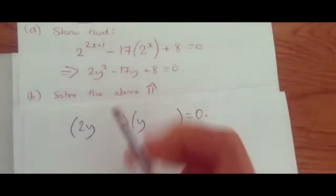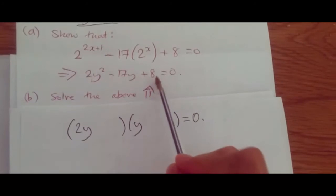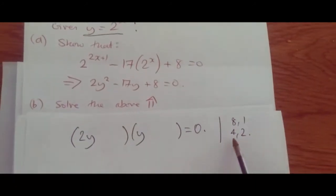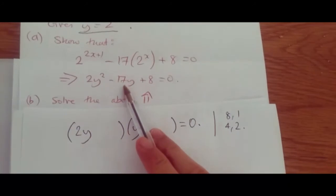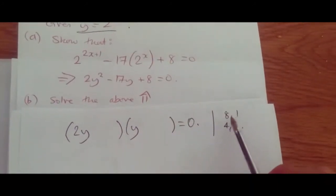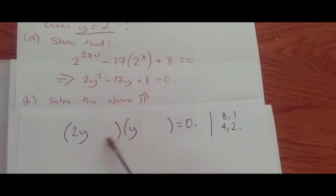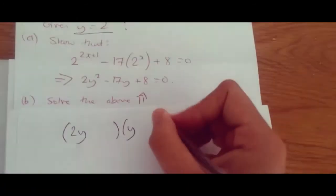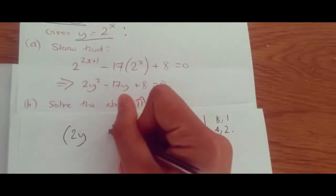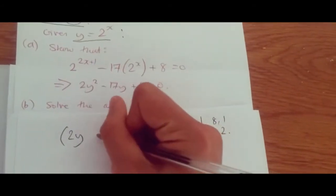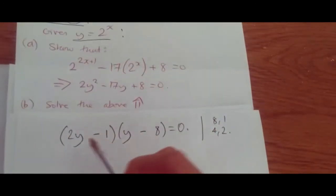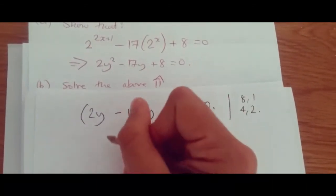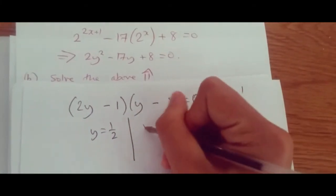My first approach would always be the factorizing method — just use double brackets. 2y and y to make 2y squared. To get 8, the only combinations we have are 8 and 1, or 4 and 2. We need to make 17 by adding and subtracting. So 2 times 8 is 16y, plus 1y gives 17. Minus minus makes sense to get negative 17 — so negative 16 and negative 1. This gives us 2y equals 1, or y equals a half, and y equals 8.